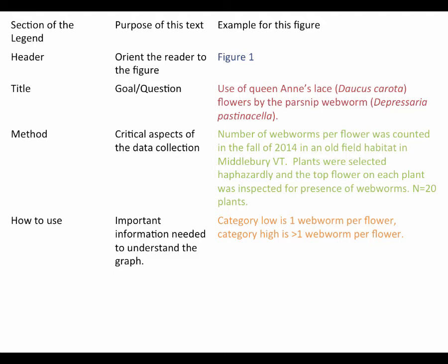Let's take a look at this text. I've talked about the number of webworms per flower — that's my y-axis — which was counted in the fall of 2004. I thought the date and year were important because these are quite variable in ecological studies. In an old field habitat in Middlebury, Vermont — the location. I then want to talk about how plants were chosen: plants were selected haphazardly and the top flower on each plant was inspected. This tells them how I chose the plants and what part of the plant I used. And then finally I looked for the presence of webworms. Something common to every study is the sample size — you always want to present that, and in this case n equals 20 plants.